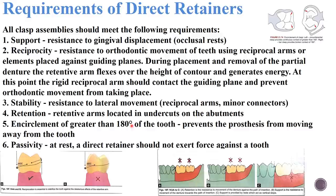Retention is the quality inherent in the denture that resists vertical forces of dislodgement — from gravity, food adhesiveness, or forces from jaw opening. The retentive arm of the clasp assembly provides retention, and it should be located in the undercuts on the abutment. Providing retention is the most important function of the clasp.